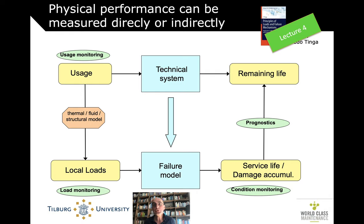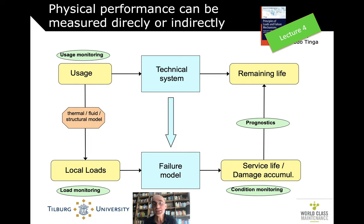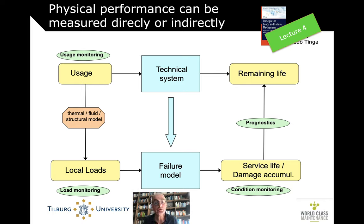In Lecture 4 on performance measurement systems, we saw that for technical systems you can measure performance more directly and indirectly. And this has important consequences for condition-based maintenance.